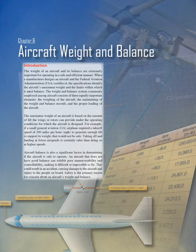Chapter 6: Aircraft Weight and Balance Introduction. The weight of an aircraft and its balance are extremely important for operating in a safe and efficient manner. When a manufacturer designs an aircraft and the Federal Aviation Administration (FAA) certifies it, the specifications identify the aircraft's maximum weight and the limits within which it must balance.